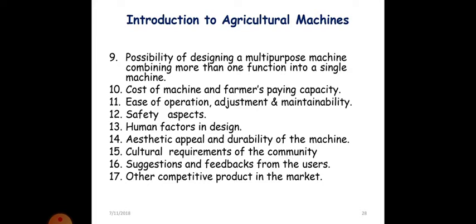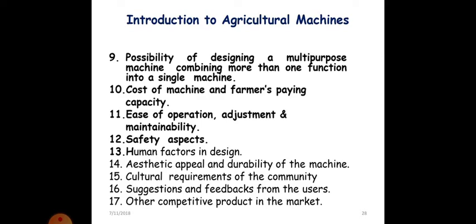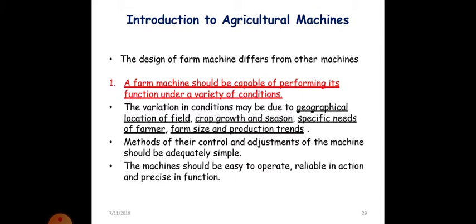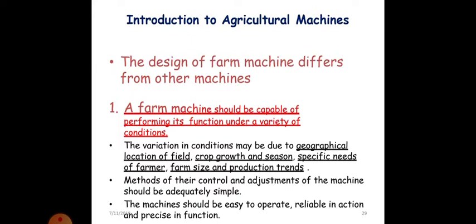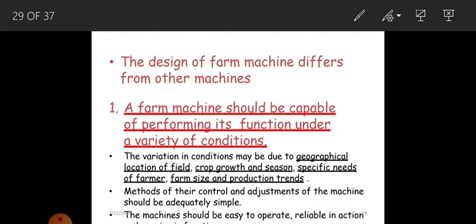Talking about the cultural requirements of the community, the design of the machine differs from other machines. The farm machine should be capable of performing its functions under the variety of conditions. The variation may be due to geographical location of the field, crop growth and season, specific needs of the farmer, farm size and production trains. Method of control and adjustment of the machine should be adequately simple. The machine should easily operate, reliable in action and other functions.